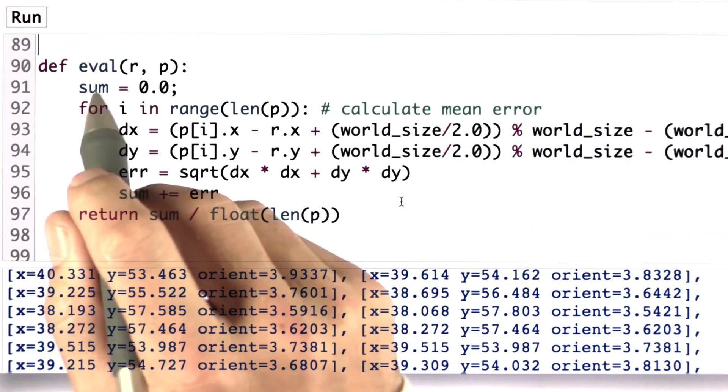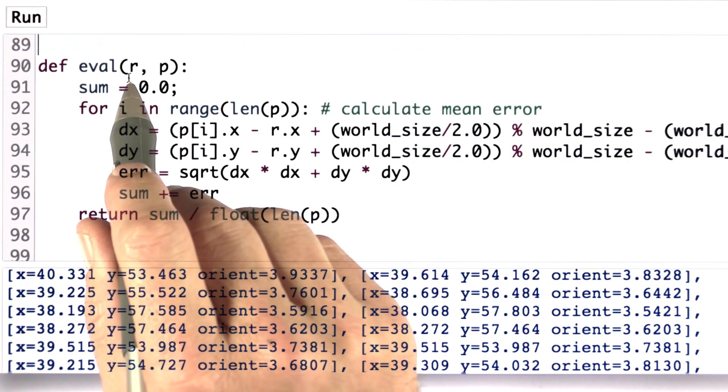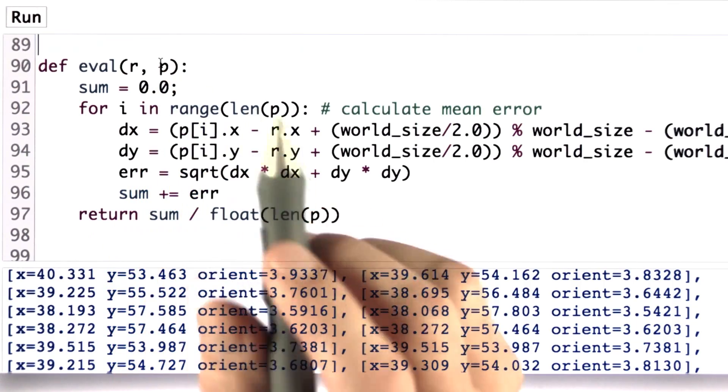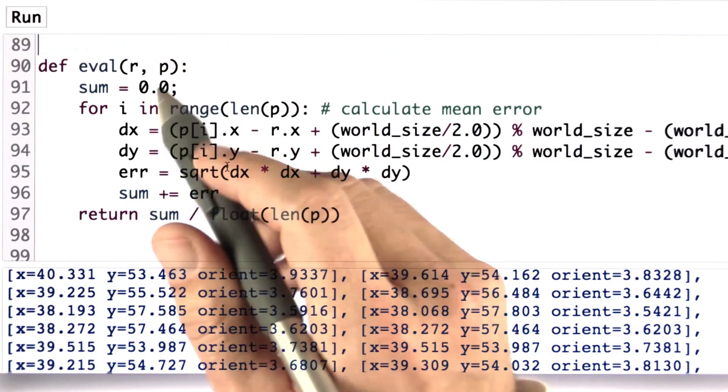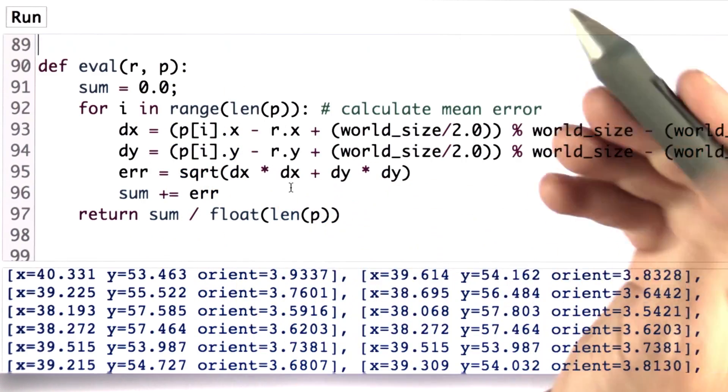And to do this, I've programmed for you an eval code, which takes in a robot position and a particle set, and it computes the average error of each particle relative to the robot pose in X and Y, not in the orientation.